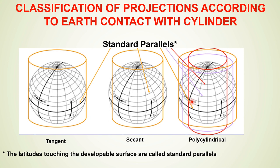According to contact with the cylinder, the cylinder may touch the globe in various ways. In a tangent position, only one latitude is touched by the cylinder. In a secant position, the cylinder is touched in two locations — two latitudes of the globe. There is also the polycylindrical case. The latitude at which the cylinder touches the globe is called the standard parallel.